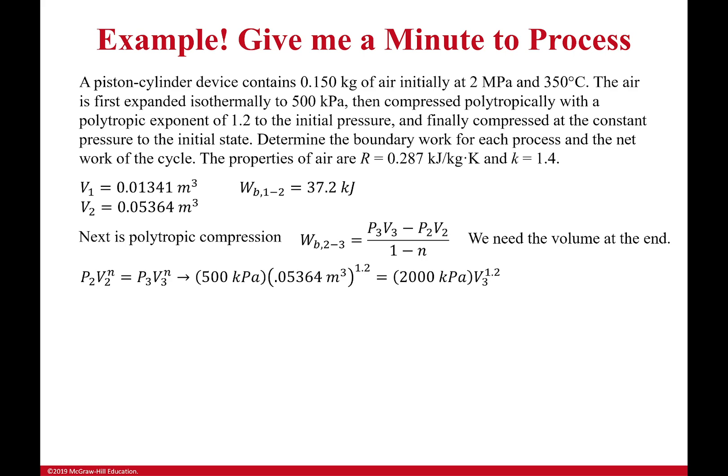Now I know from our polytropic process that pressure times volume raised to that exponent is a constant. It doesn't change. And since I know the pressure at the beginning and the end, and I know the volume at the beginning, I can find out what the volume at the end is. So I plug everything in. My pressure P2 times my volume, which we calculated earlier, raised to the exponent of 1.2 is equal to my pressure P3 times my volume three raised to the exponent. And when I solve for that, I get my volume three is equal to 0.0169 meters cubed.